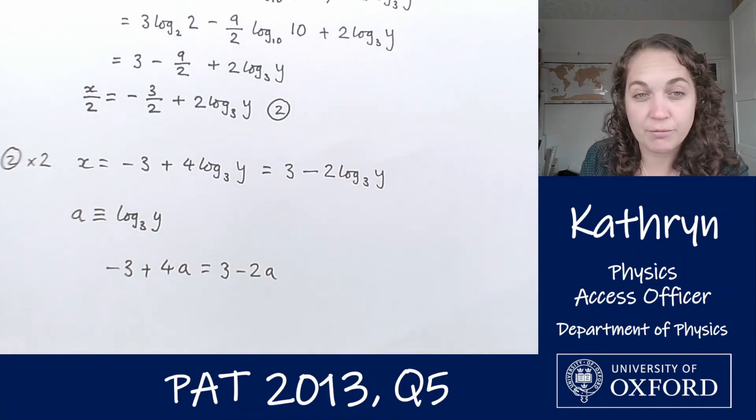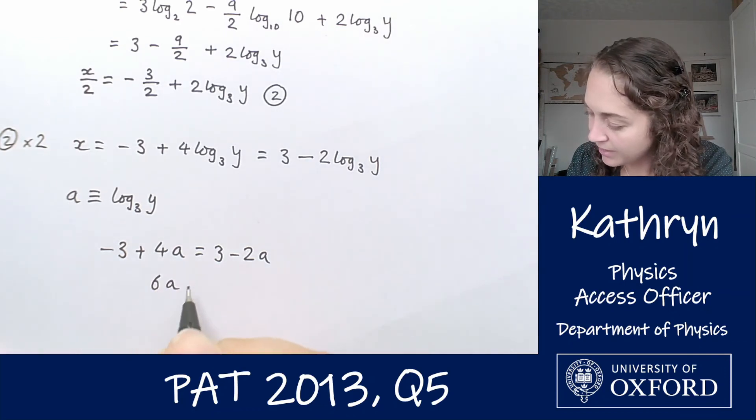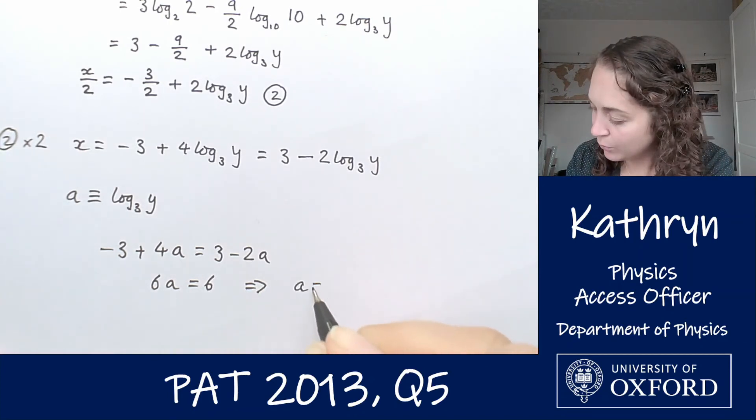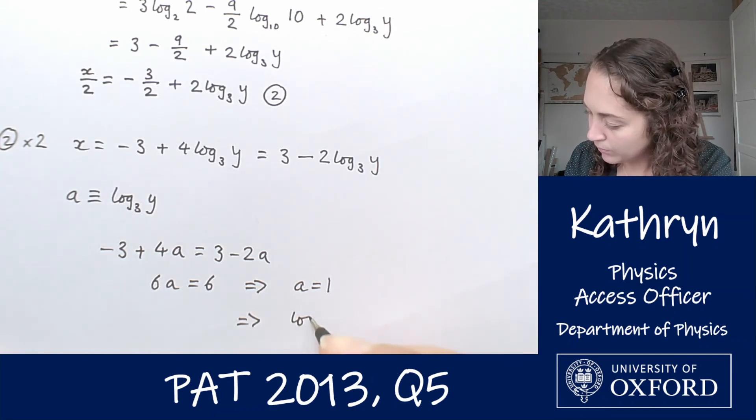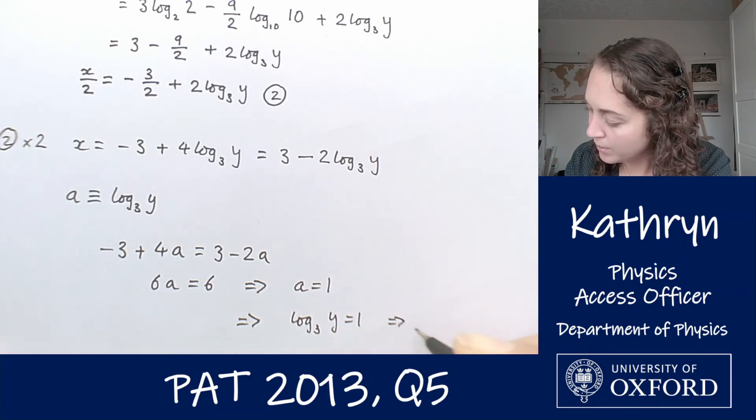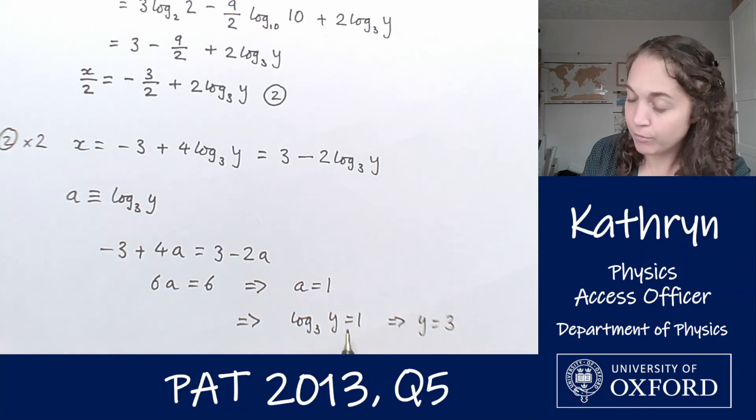Now I'm just solving for a. That will give me that 6a equals 6, so a equals 1. So log base 3 of y equals 1, which means that y must be 3, because log base 3 of 3 is 1.